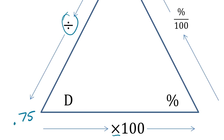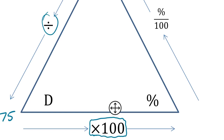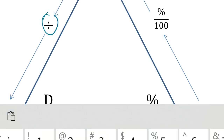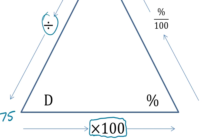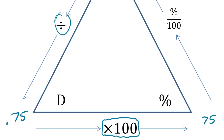To go from a decimal to a percentage, take the decimal and multiply it by 100. So 0.75 times 100 gives us 75%. When you multiply by 100, all that really means is you move the decimal point two places to the right — so 0.75 becomes 75.